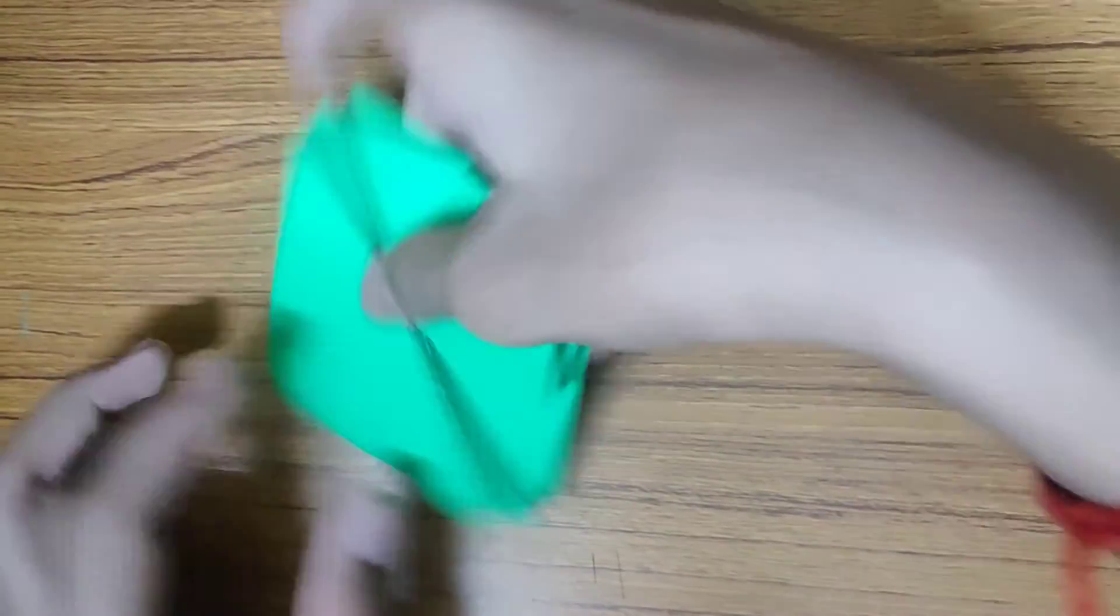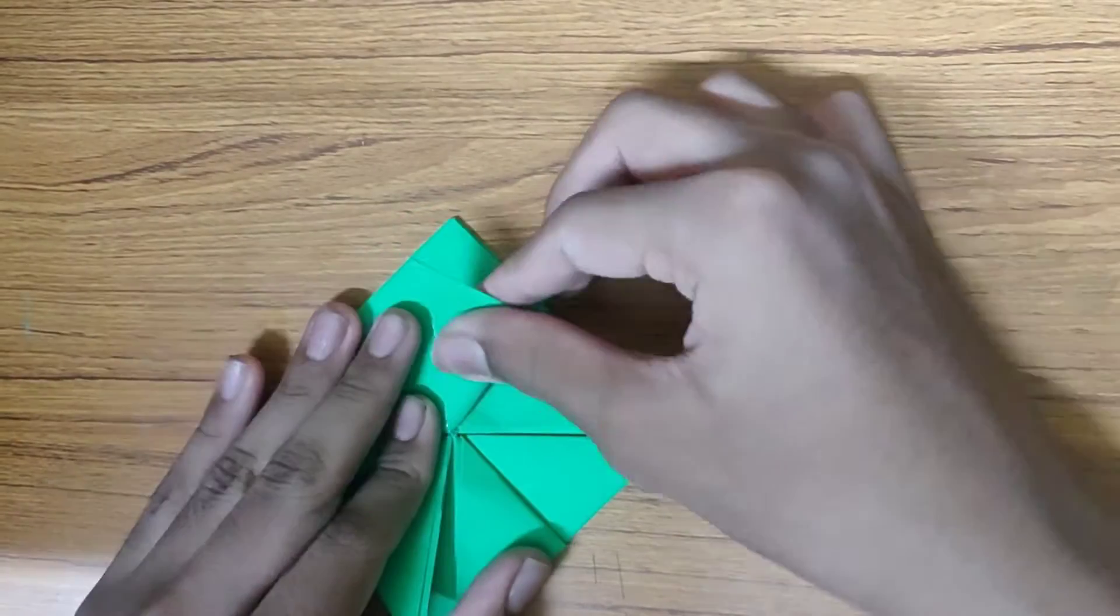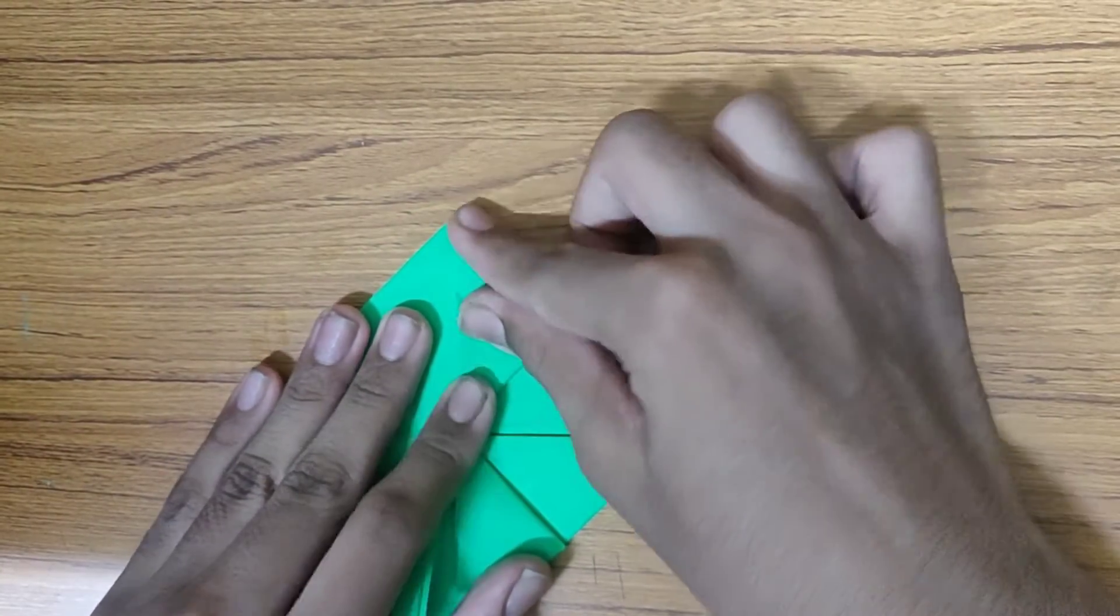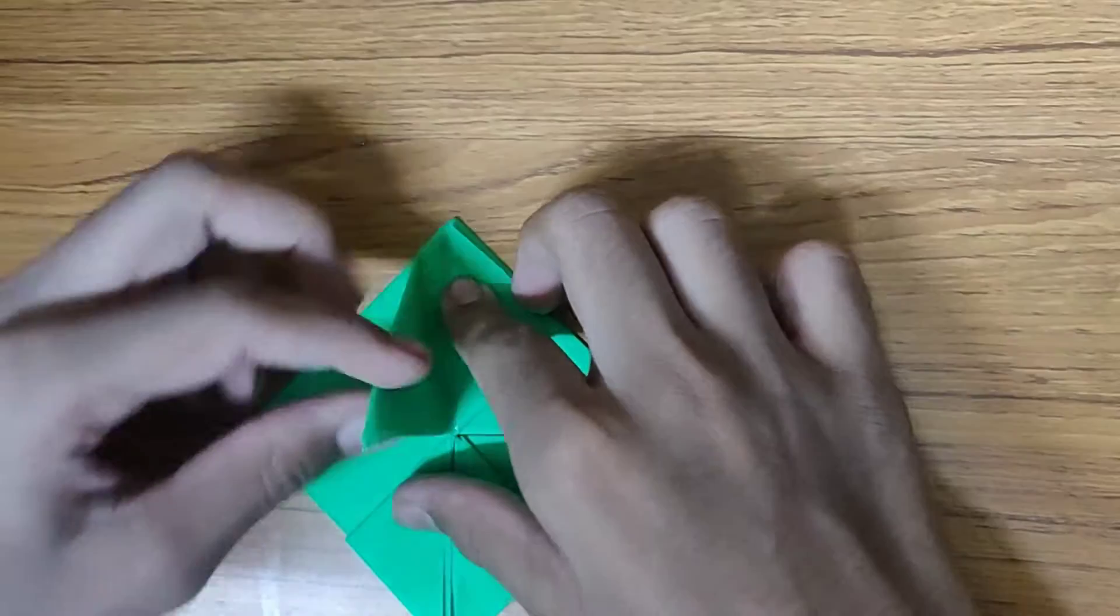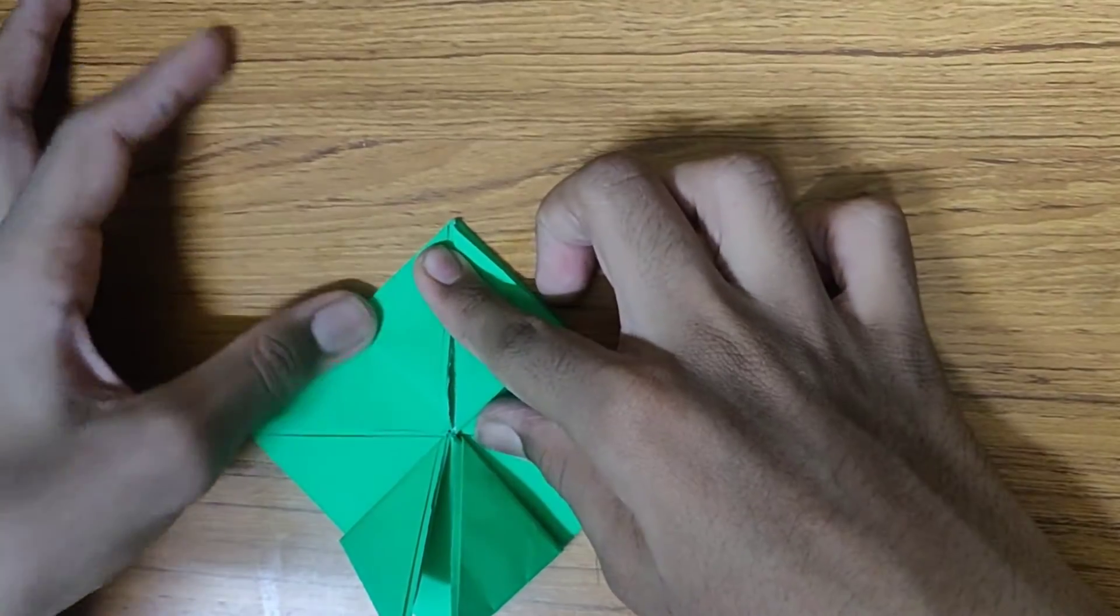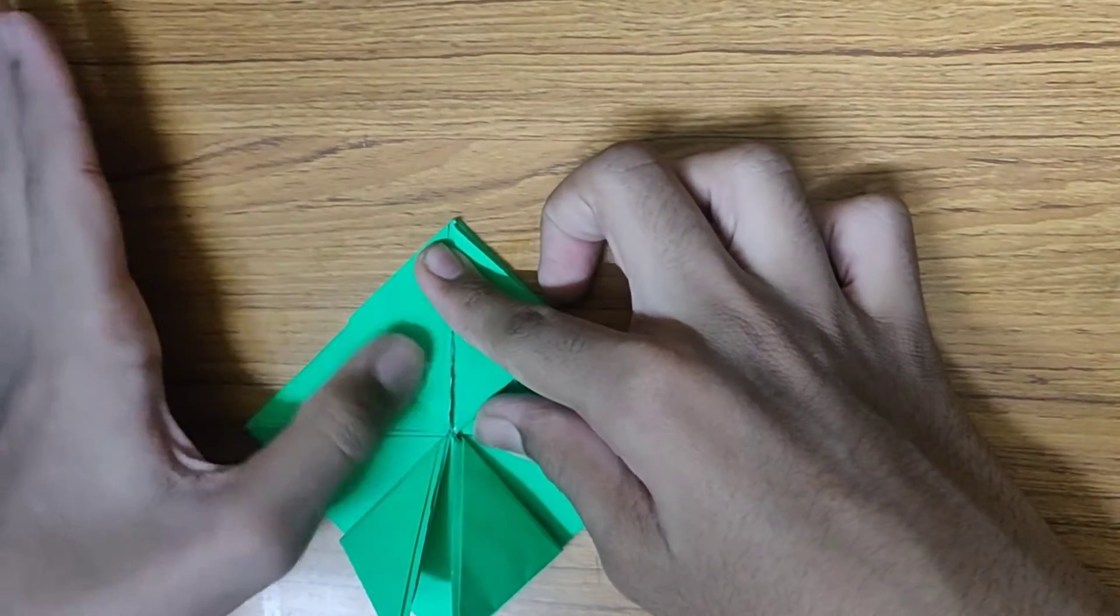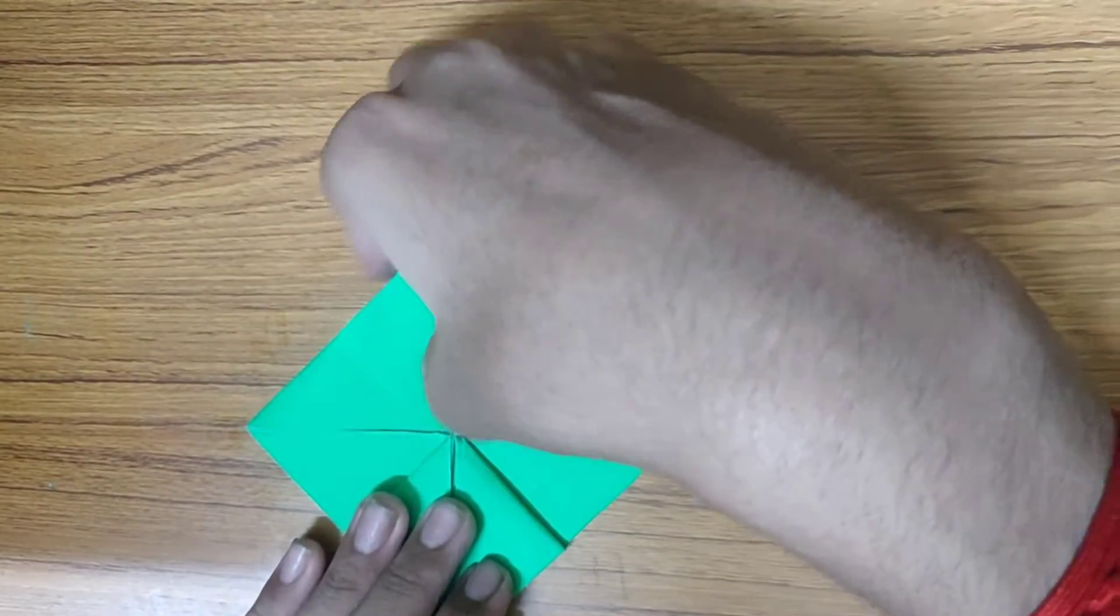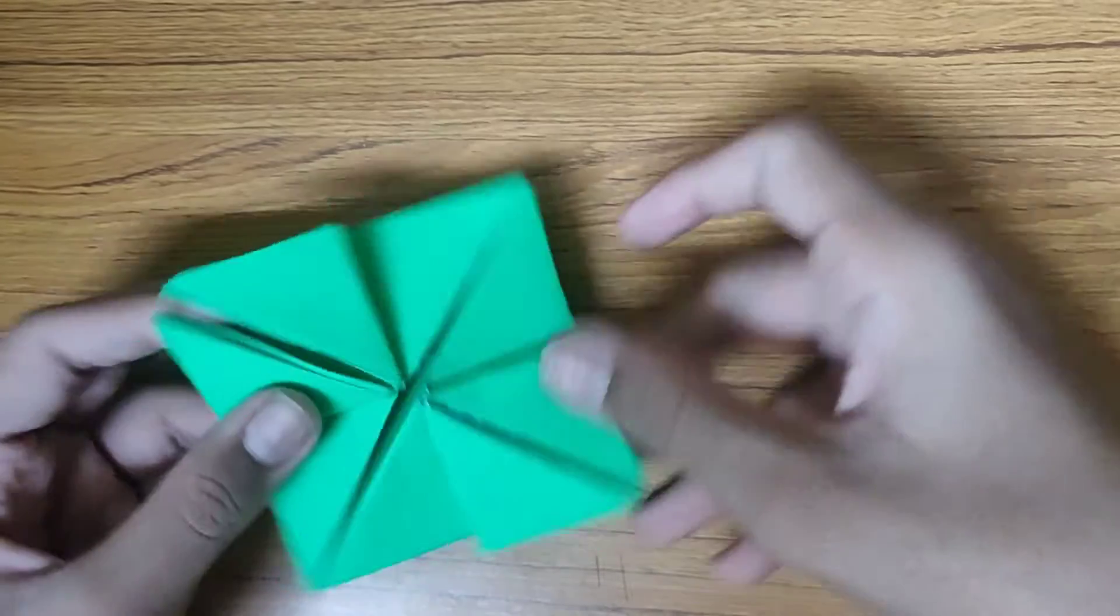Now let's just turn our paper over and of course repeat the same fold. Crease it. So we'll be having something like this.